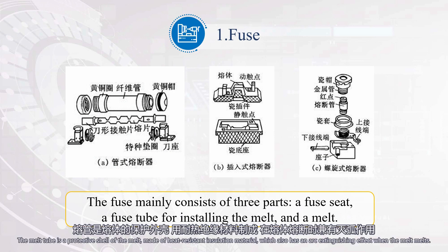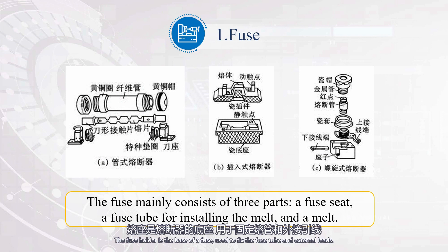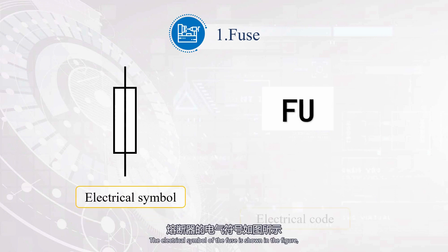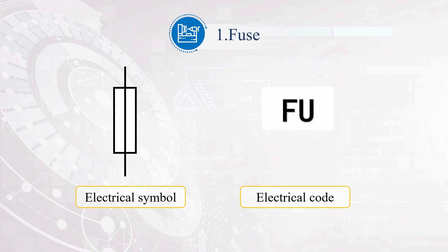The melt tube is a protective shell of the melt, made of heat-resistant insulation material, which also has an arc-extinguishing effect when the melt melts. The fuse holder is the base of a fuse, used to fix the fuse tube and external leads. The electrical symbol of the fuse is shown in the figure, which can be memorized by combining the symbol of the resistor component. The straight line of the fuse passes through the short side of the small rectangle. The electrical code is FU.